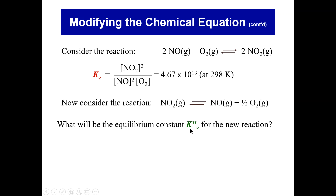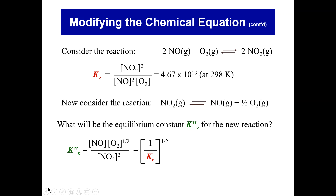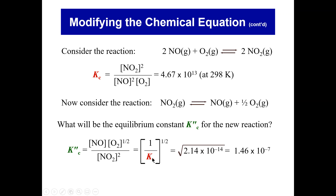To determine the Kc for the new equation, we write down its Kc expression: concentration of NO times concentration of O2 raised to the one-half, divided by concentration of NO2. This expression equals 1 over the original Kc raised to the one-half. We plug in 2.14 times 10 to the minus 14 — the value of 1 over Kc from the previous example — and take the square root, giving 1.46 times 10 to the minus 7.